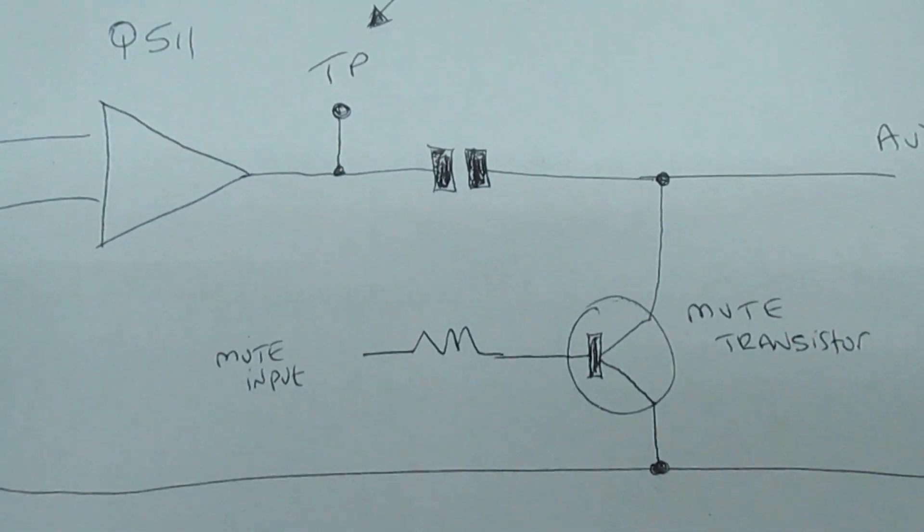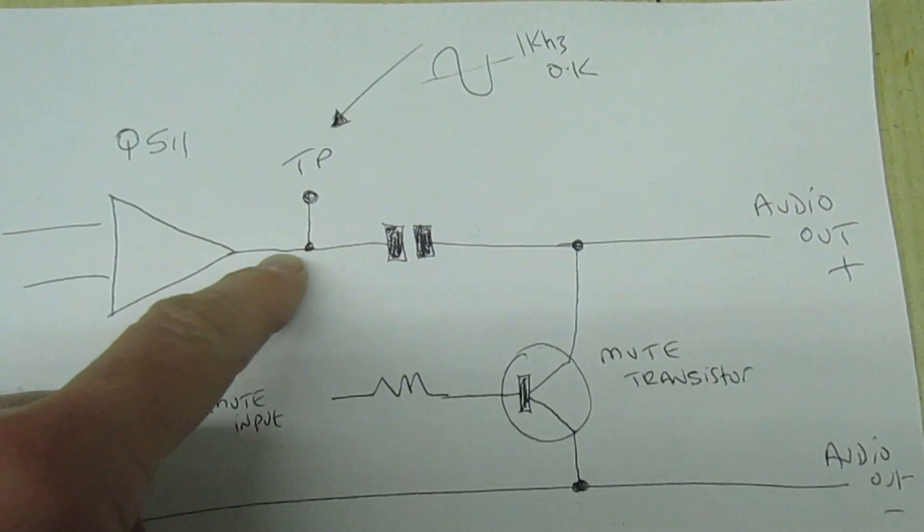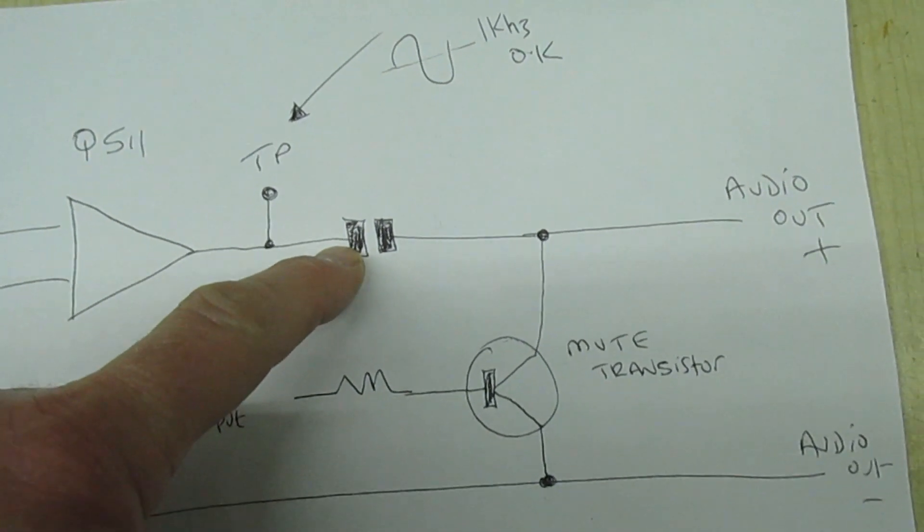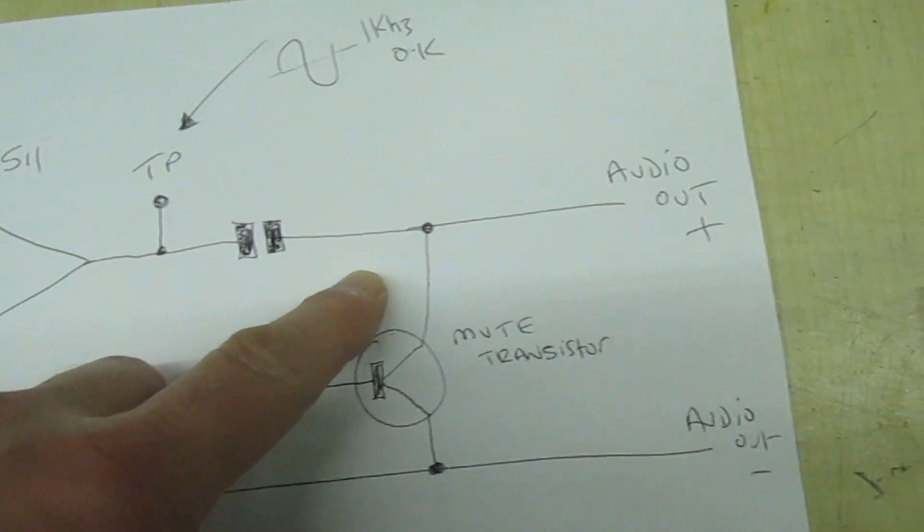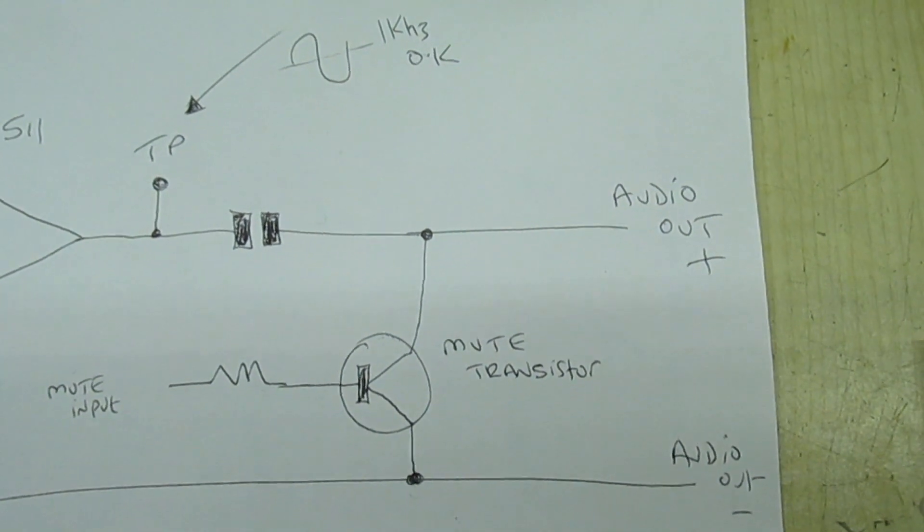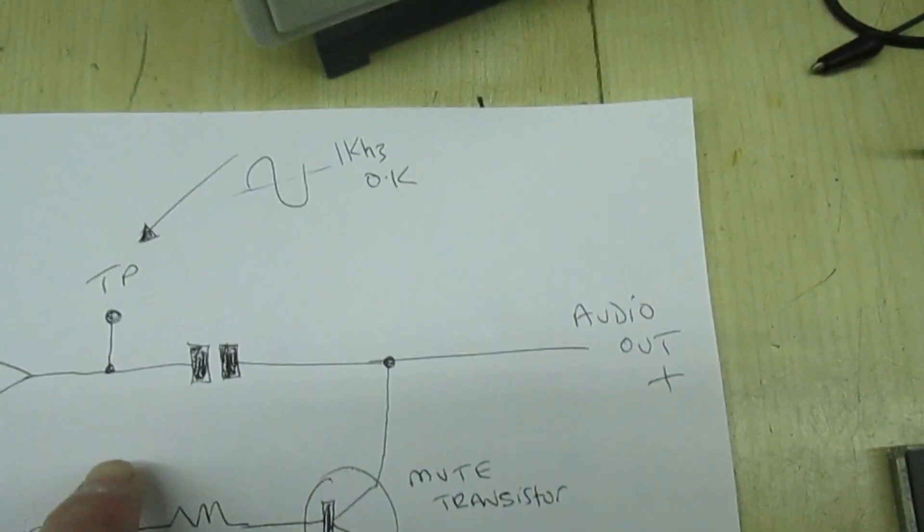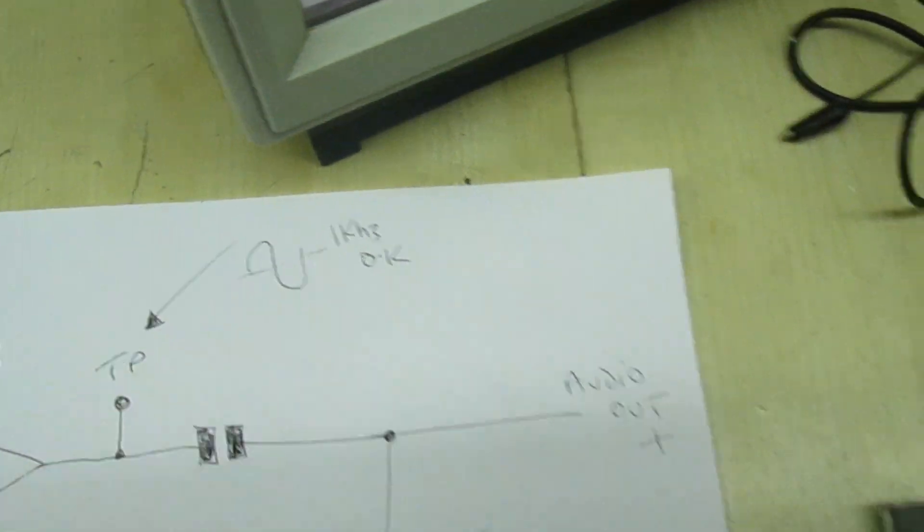Now I've examined the diagram. I've just drawn this down to make it a bit easier to see. So the output from the op-amp feeds a DC blocking capacitor, and then we've got a transistor used for mute, which is connected directly across the audio output. So effectively that shorts out the audio output when it goes to mute. Now I measured this test point here and we do have a perfect one kilohertz test tone playing from the disc, so I'll just show you on the scope.